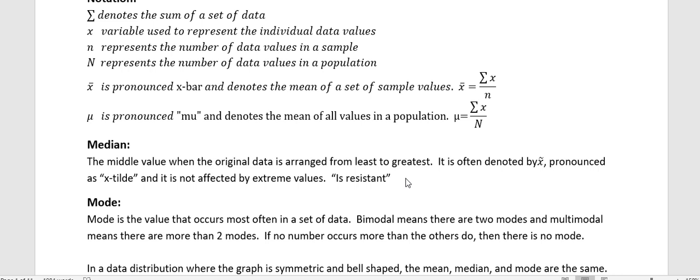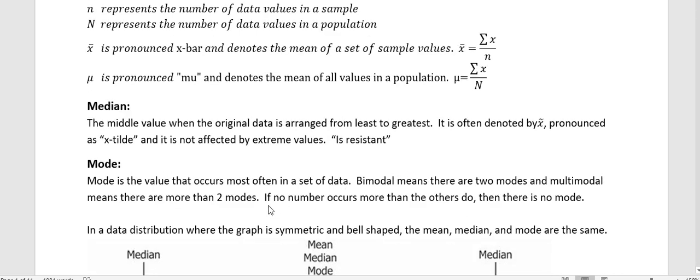The mode is the value that occurs most often in a data set. Bimodal means there are two modes and multimodal means there are more than two modes. If no number occurs more than others we say there's no mode, but also if we have seven of one value and seven of another value and seven of another value, we just say there's no mode even though there's many values that occur the same number of times.